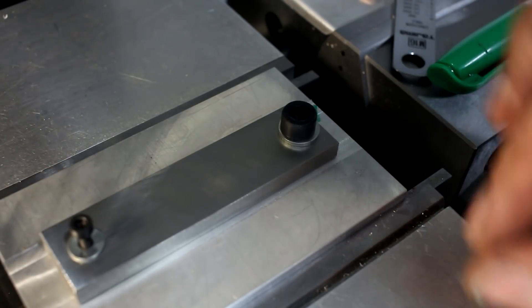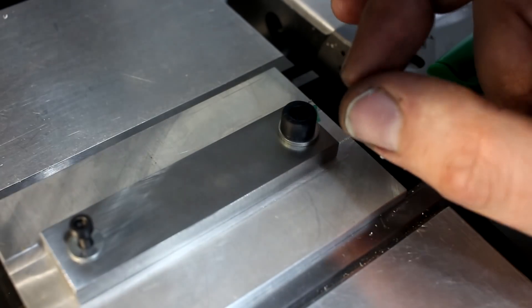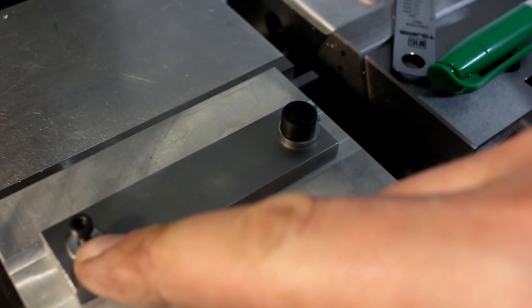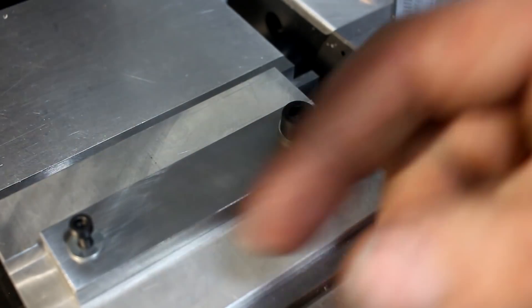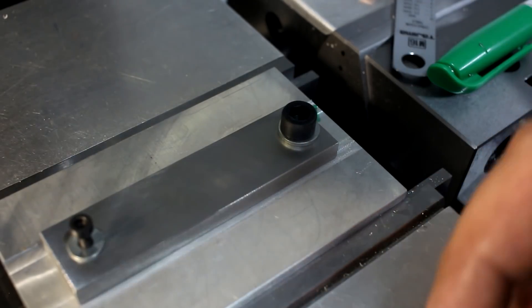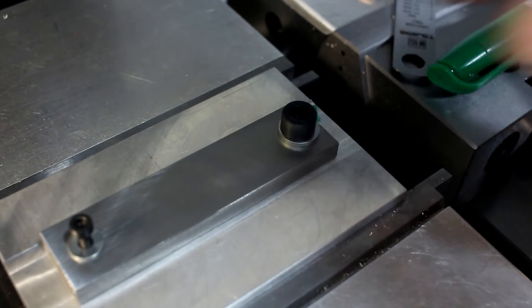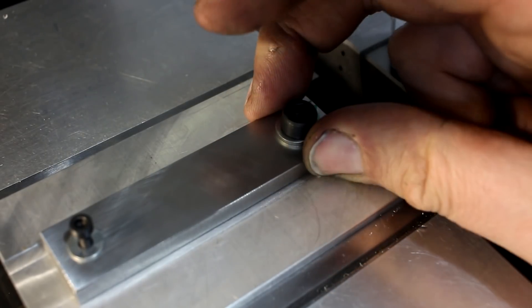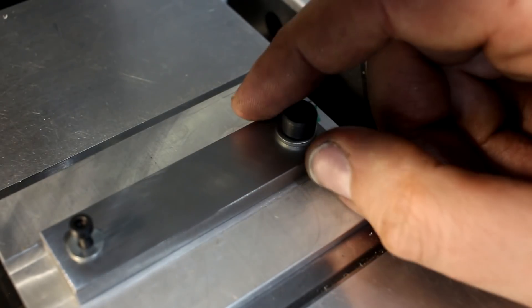A screw alone, if it's not a registering bolt, is not a locating item because the screw thread has always clearance in the clearance hole. That's why it's called clearance hole. But with the precision drill bushings it's located pretty good.